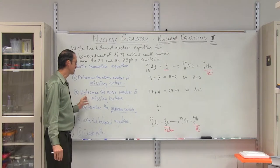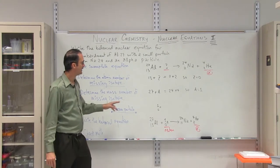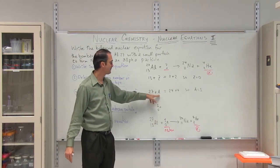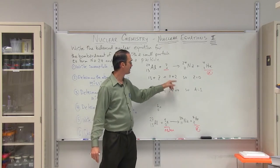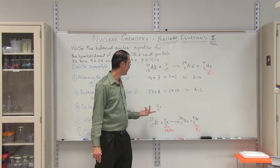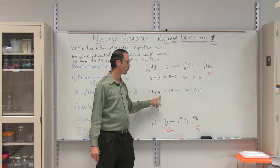The next thing then is to determine the mass number of the missing isotope. Here we have 27 plus A, the mass number, equals 24 plus 4. So we have an A equals 1.